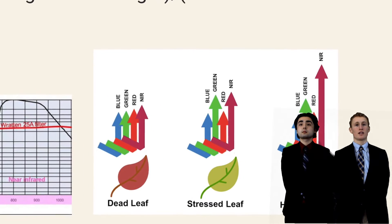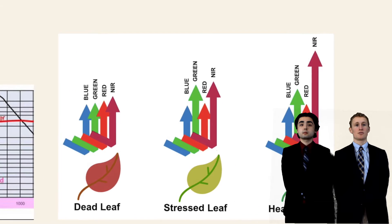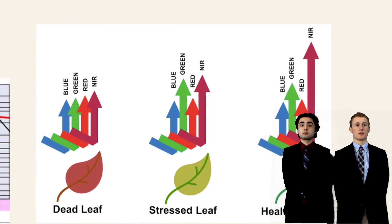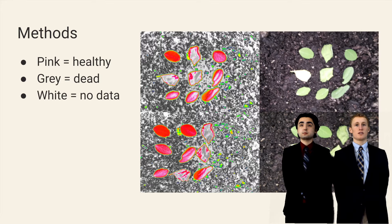Using a Pi NoIR infrared camera with a red filter, we were able to capture infrared light and red light similar to a multi-spectral camera. The images were then used to create a Normalized Difference Vegetation Index or NDVI for short, highlighting the dead or stressed leaves.